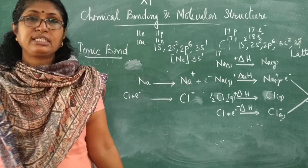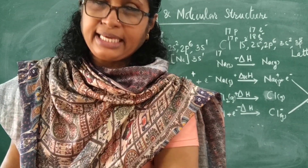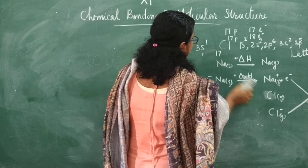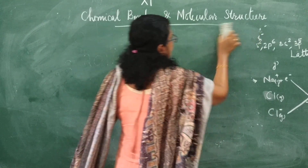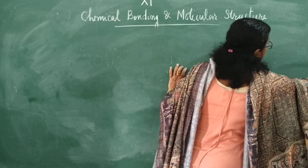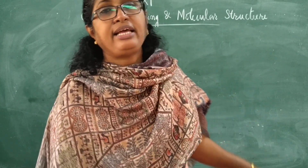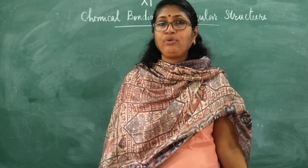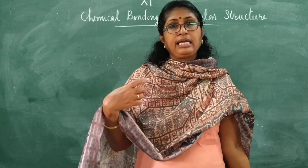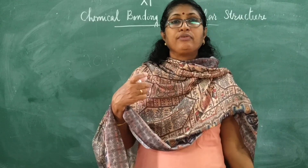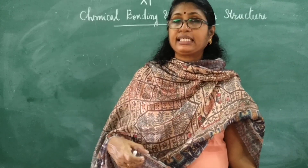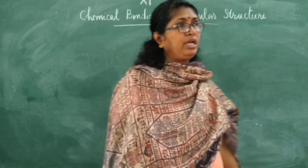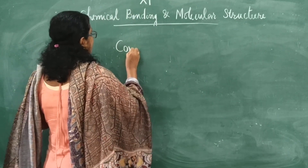Ionic compounds have a crystalline structure with closely packed ions, high melting and boiling points, and are highly soluble in water. They are bad conductors in solid state but good conductors in aqueous solution state. That covers the ionic bond.